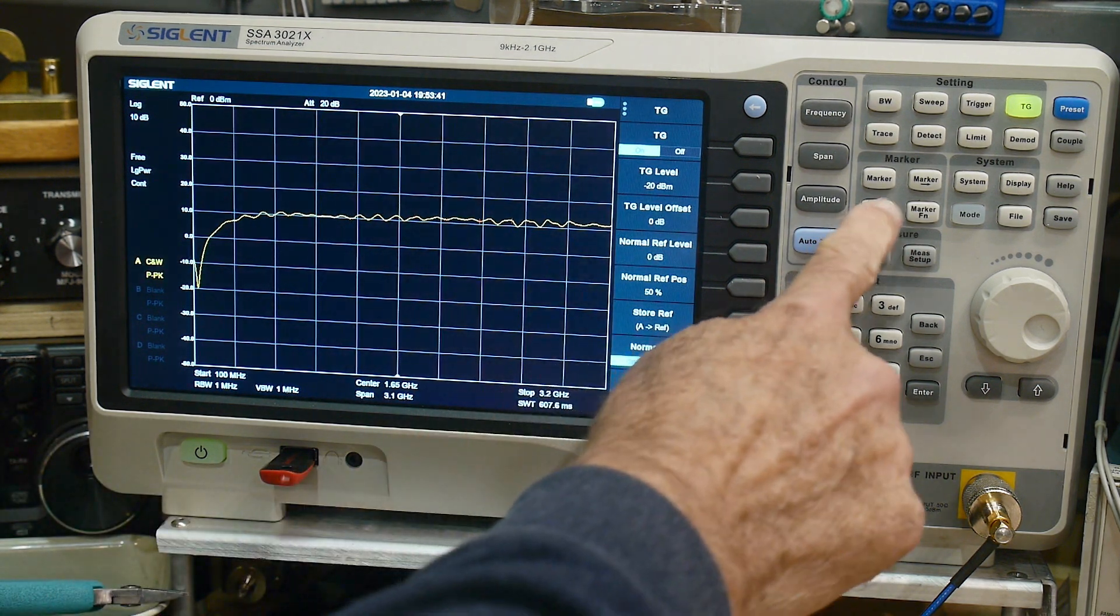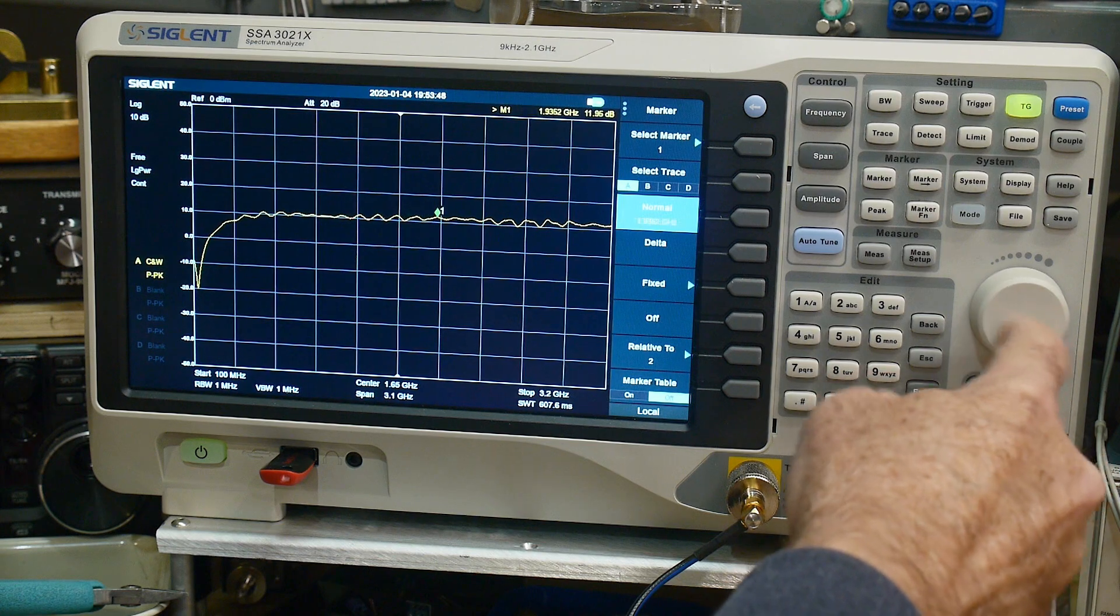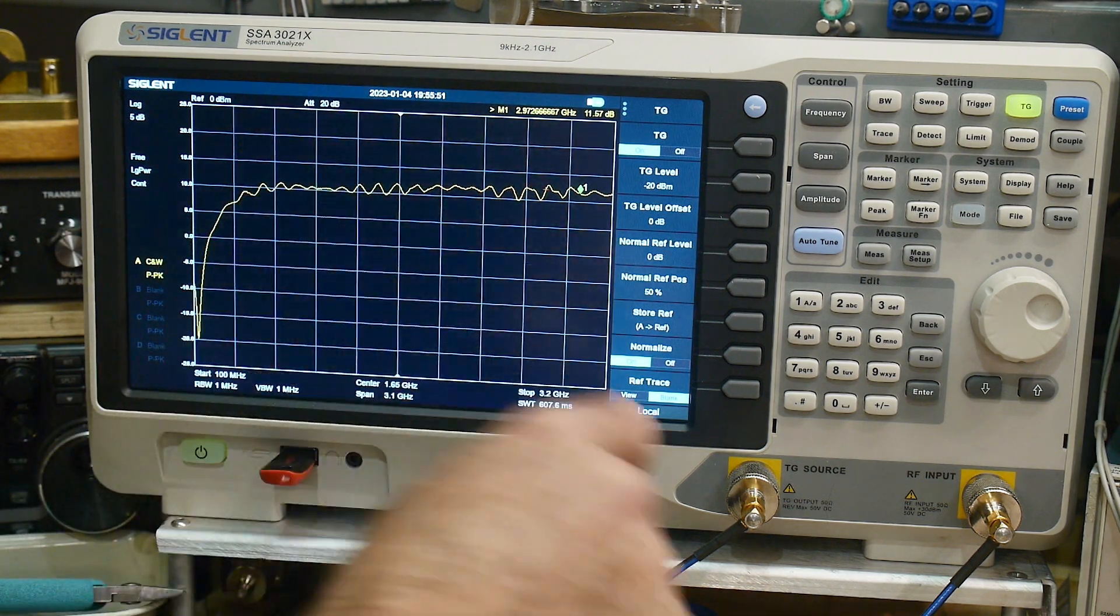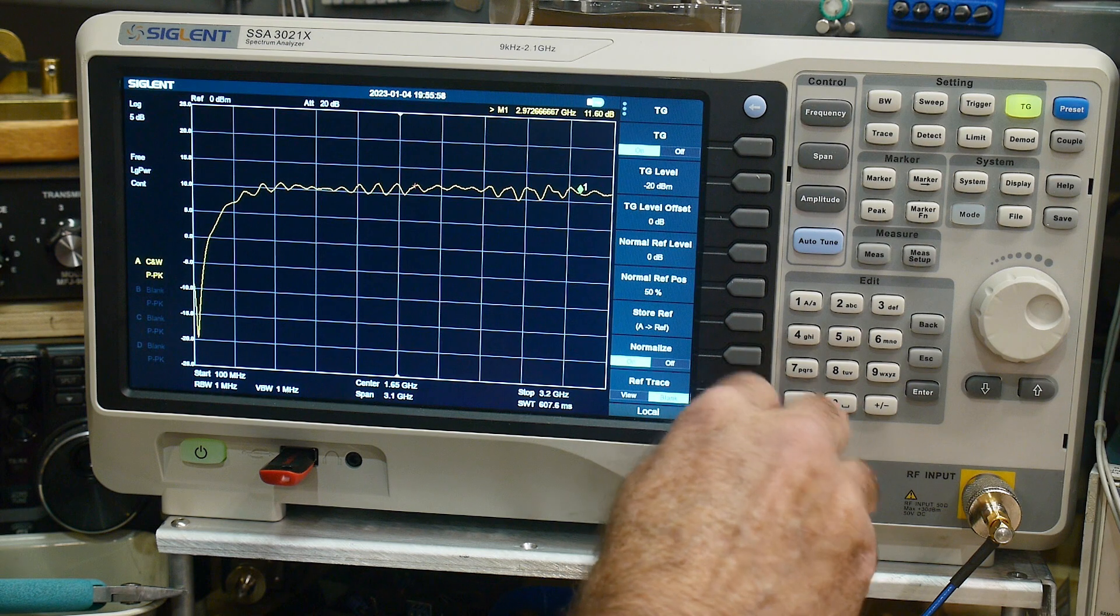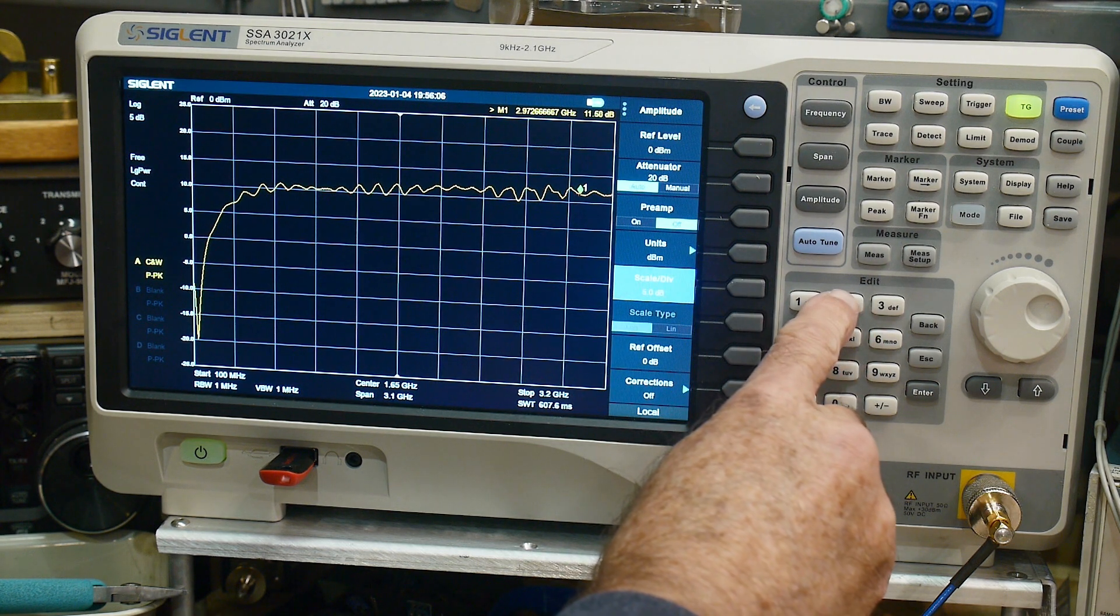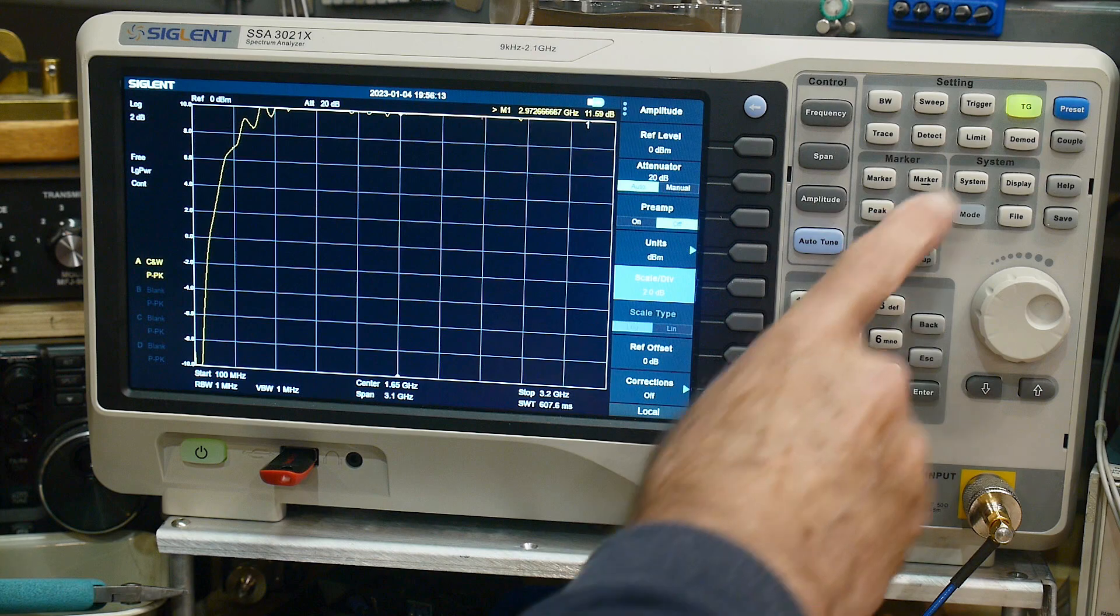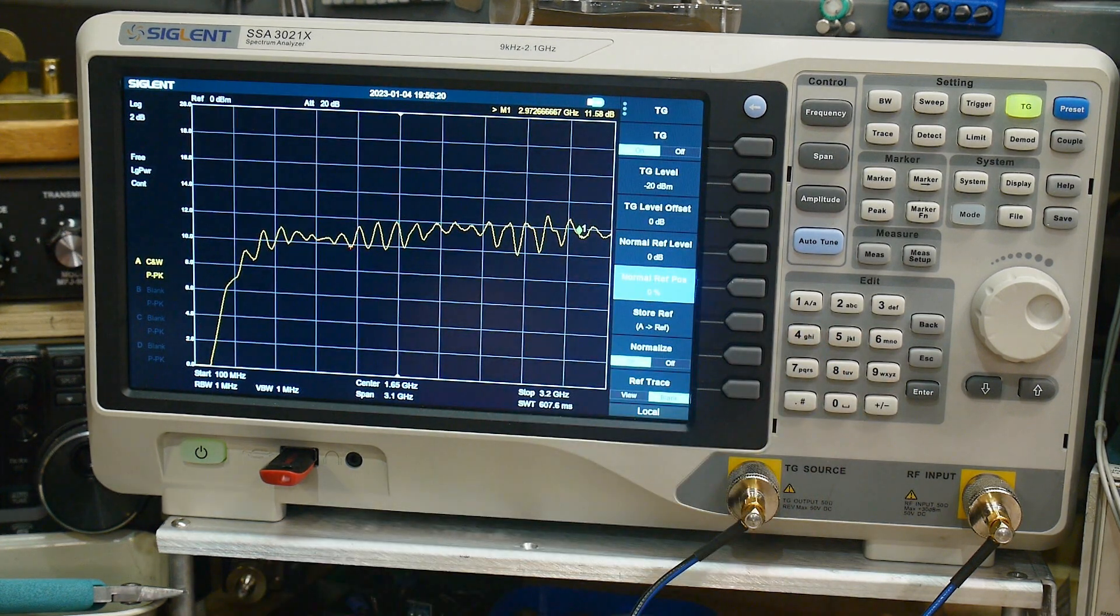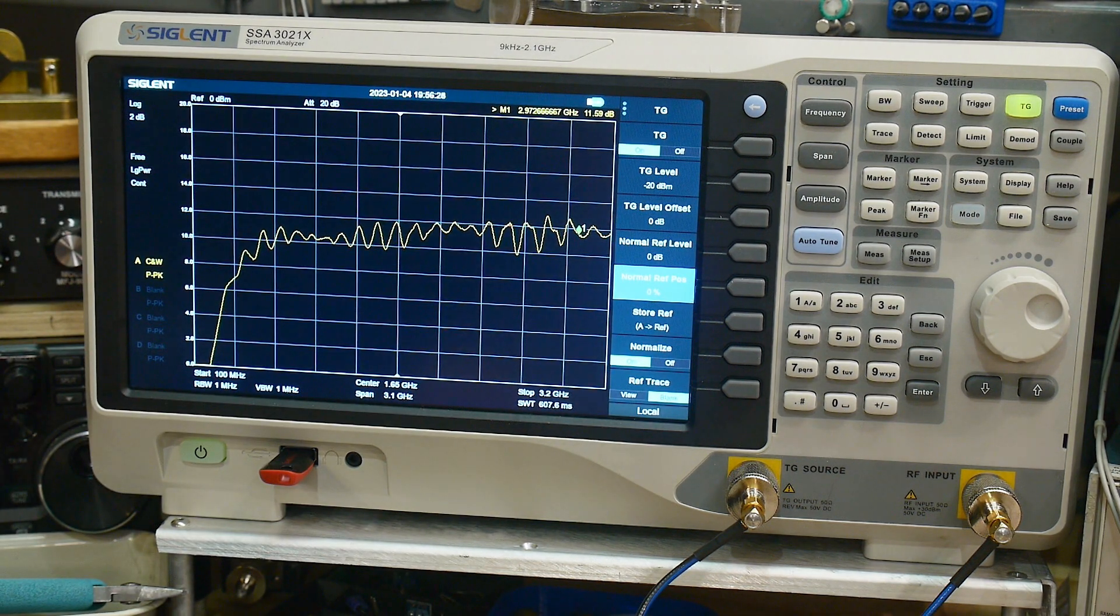We have 10 dB of gain from about 450 megahertz to 3.2 gigahertz. It's a bit bumpy. If we want to get a better look at this, we can change the scale per division. Let's try two dB. We'll set the reference position to zero. You can see it's wiggly up and down across the frequency range.